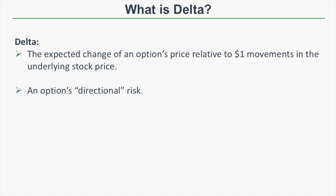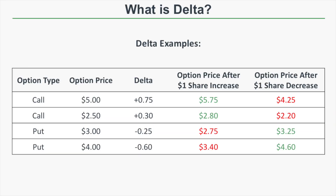Delta is the expected change of an option's price relative to $1 movements in the underlying stock price. The underlying is just the stock that the option is traded against — so if you're trading Apple options, the underlying is Apple. Since Delta represents the expected change of an option's price relative to price changes in the stock, Delta also represents the option's directional risk. Let's go through some examples.